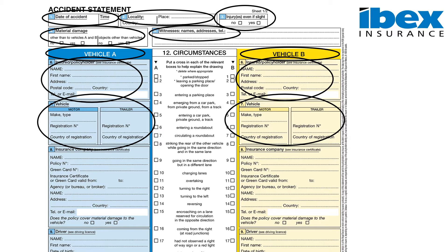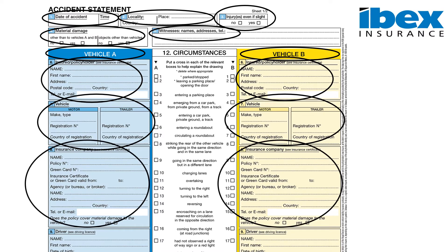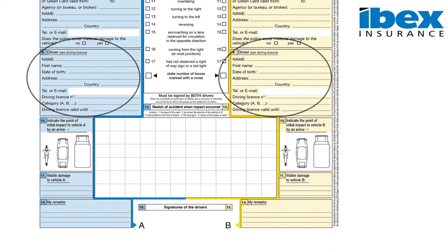In section 8, we must enter the name of the insurance company, policy number, and the period of cover. Section 9 relates to the driver of the vehicle at the time of the incident.